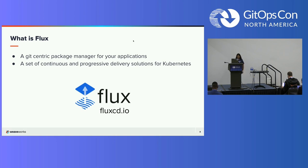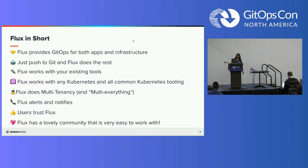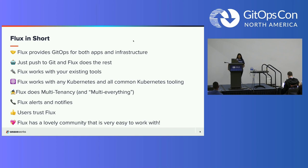Flux really reduces developer burden because it removes the need for manual deployment processes. The Flux CLI is a really convenient way to bootstrap the system in a cluster and then access the custom resources that make up the API. These are some things we like to highlight about Flux on our website. Flux provides GitOps for both apps and infrastructure — using Flux and Flagger, you can do progressive delivery with Canary's, feature flags, and A/B rollouts. Flux can also manage any Kubernetes resource.